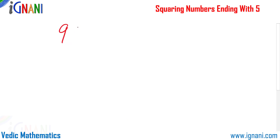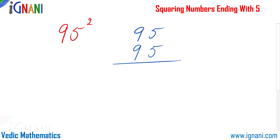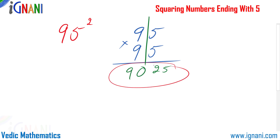Let us find the square of 95, which is 95 multiplied by 95. Splitting the number: 5 into 5 gives 25. Then 9 into 9 plus 1 is 9 into 10, which equals 90. So the result is 9025.